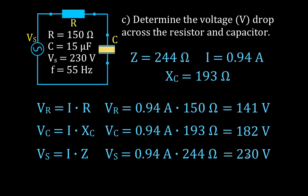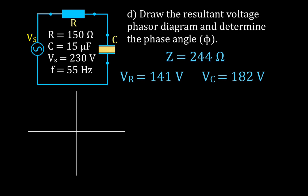Next we determine the phase angle phi and draw the phasor diagram for the voltage. The voltage across the resistor is in phase with the current, so its vector is drawn along the positive x-axis. The voltage across the capacitor lags the current by 90 degrees in a capacitive circuit, so its vector is drawn along the negative y-axis. These are drawn roughly to scale — 141 volts along the x-axis and 182 volts along the y-axis.